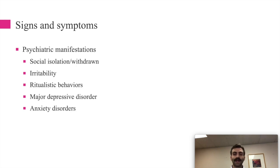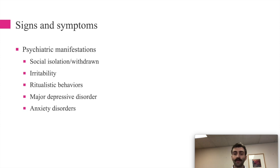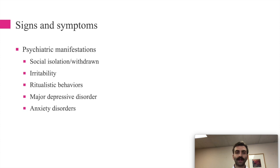Psychiatric manifestations of anorexia nervosa include social isolation and withdrawal, irritability, ritualistic behaviors — which overlap with OCD — major depressive disorder, anxiety disorders, and substance use disorders. Many of these symptoms are broad and can be components of multiple mental illnesses.